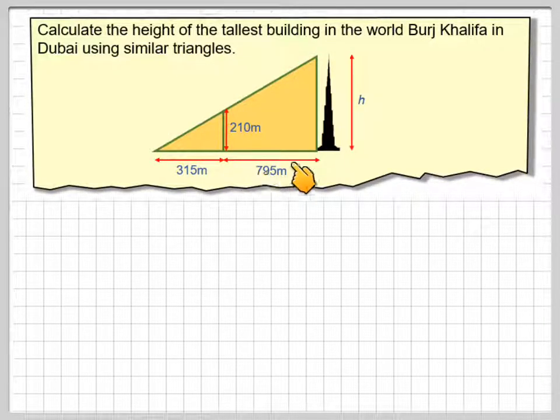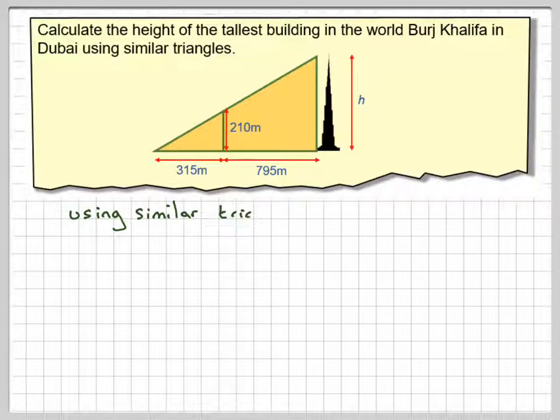So here what we've got is one triangle here and then we've got this other smaller triangle here, and we're being asked to estimate the height or use that to calculate the height of the Burj Khalifa, which is currently the tallest building in the world. So using similar triangles.